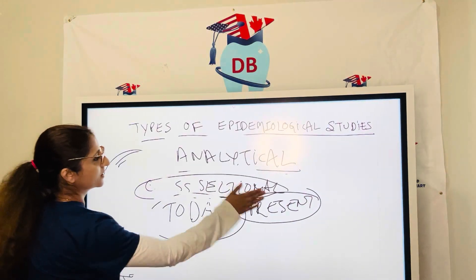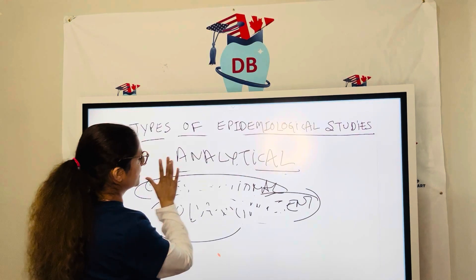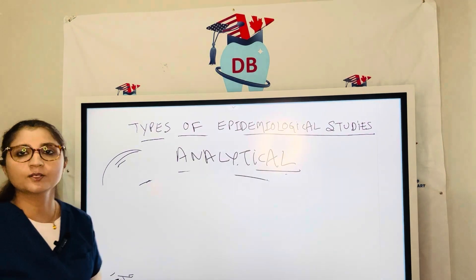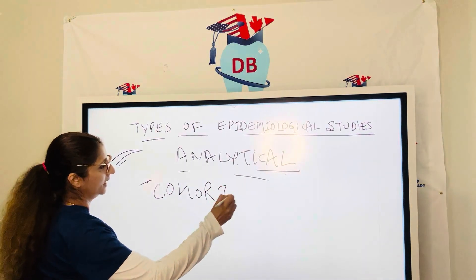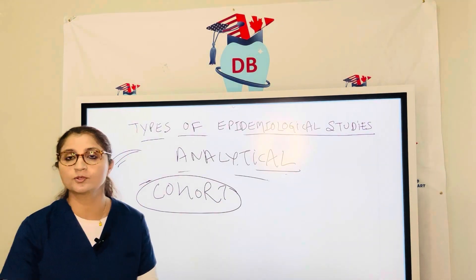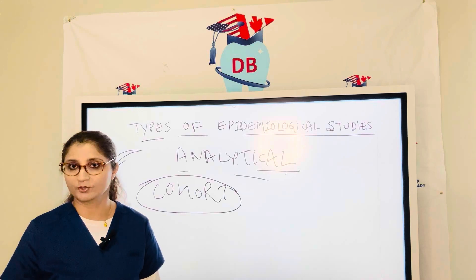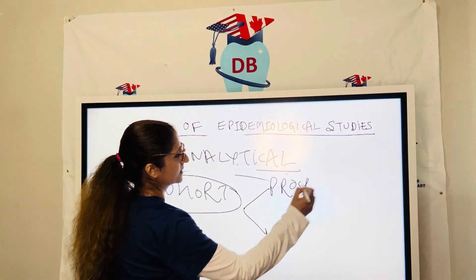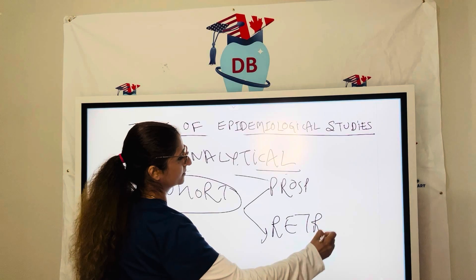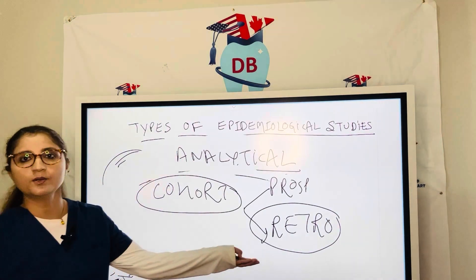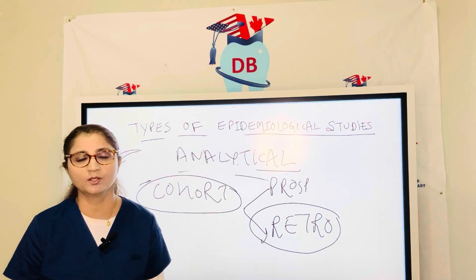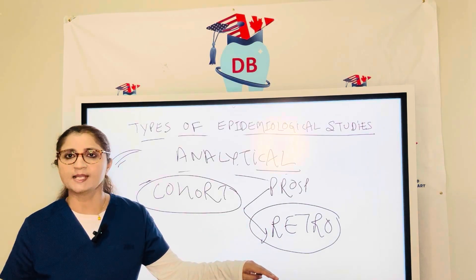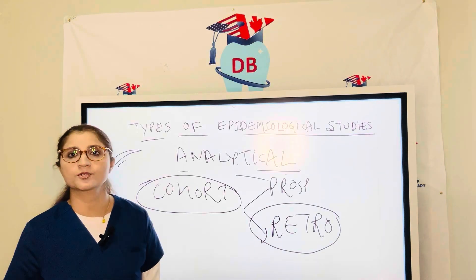When we talk about the second study — cohorts — you again have two groups: the study group and the control group. Cohorts are divided into prospective cohorts and retrospective cohorts. In retrospective cohort, as the word suggests, we are going into the past. We are asking: those 10 subjects who were smoking in the past — did they develop cancer at that time? Yes or no? That is retrospective cohort.